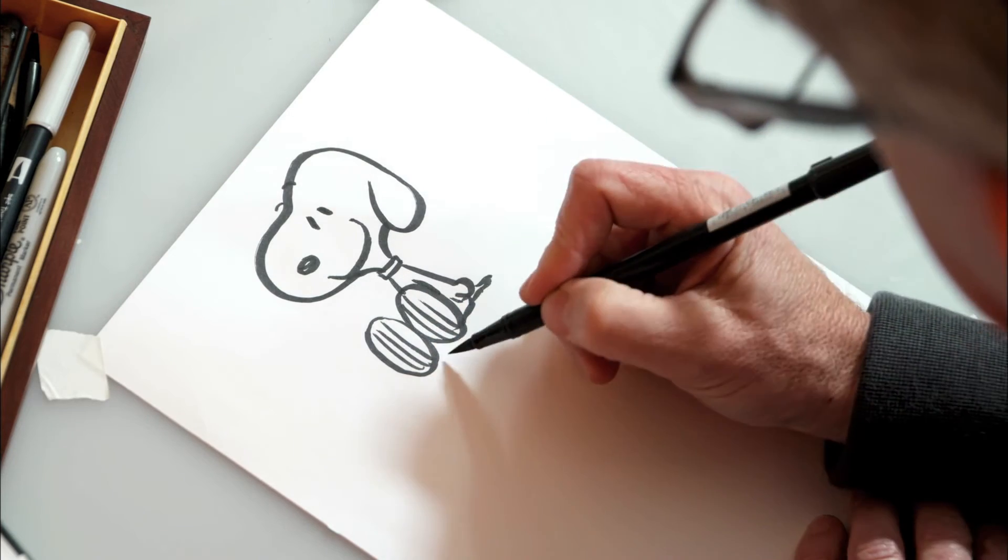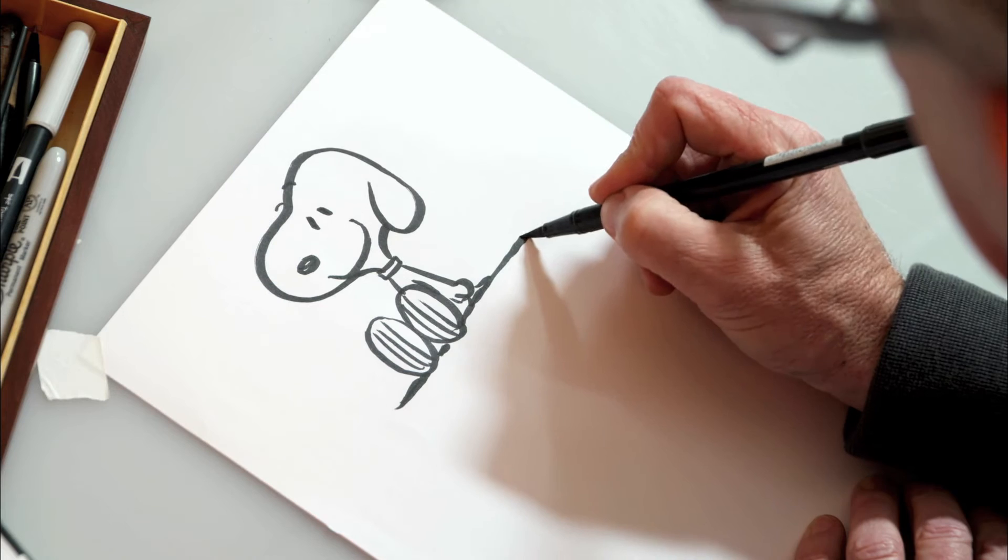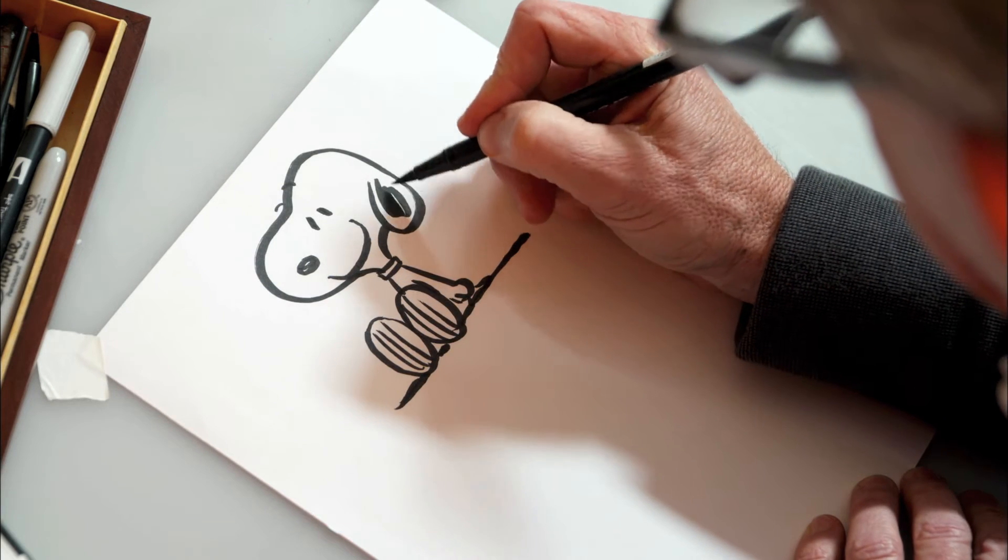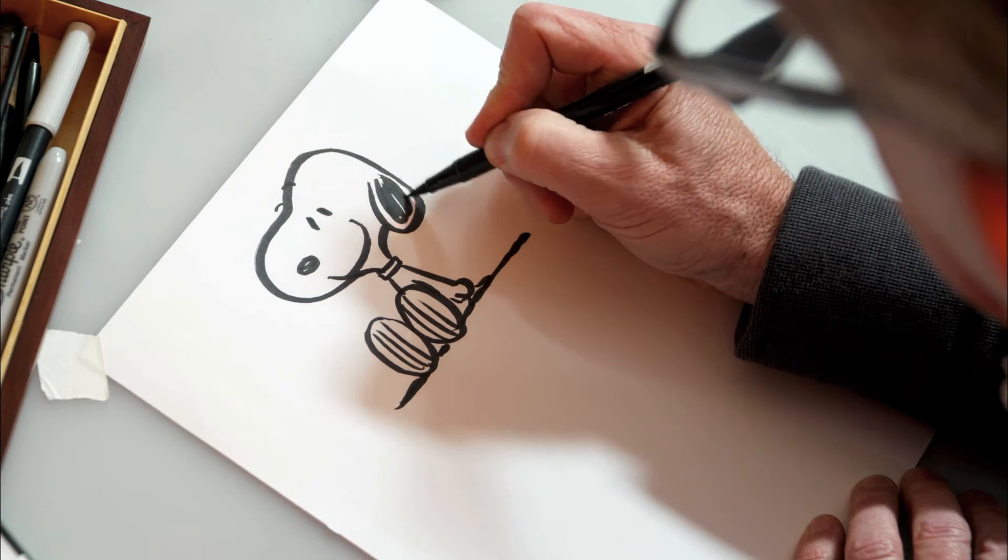Add a little bit of shadow to make it look like he's sitting on the ground or, in this case, maybe the doghouse. And, of course, don't forget to shade in his black ears.